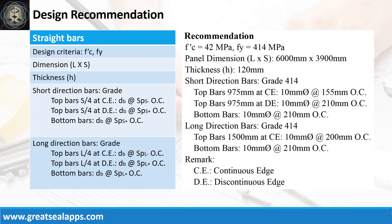Design recommendation as follows: f'c equals 42 MPa; fy equals 414 MPa; panel dimension is 6,000 mm by 3,900 mm; thickness is 120 mm. Short direction bars of grade 414: top bars at continuous edge — 975 mm, 10 mm bar at 155 mm on center; top bars at discontinuous edge — 975 mm, 10 mm bar at 210 mm on center; bottom bars — 10 mm bar at 210 mm on center.